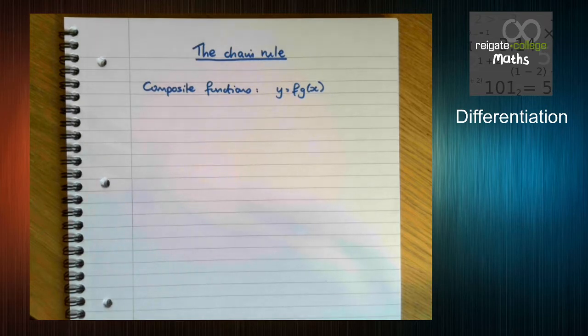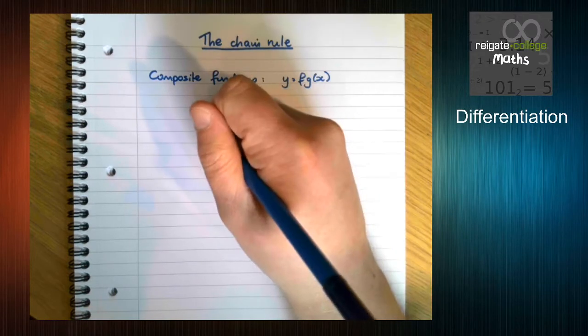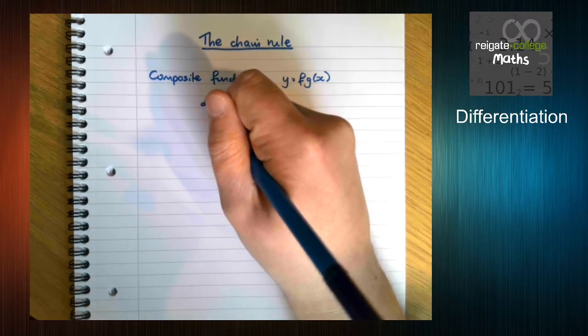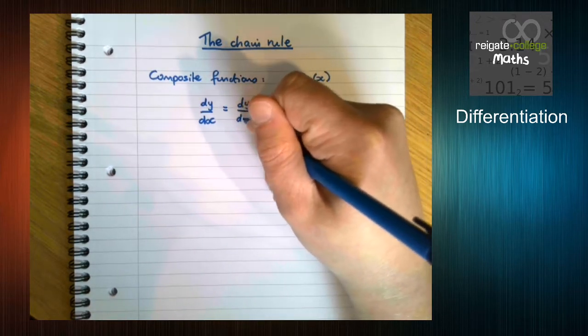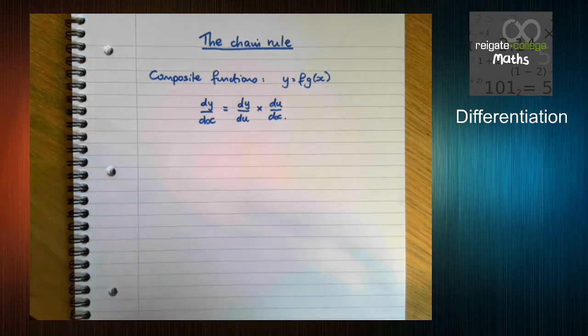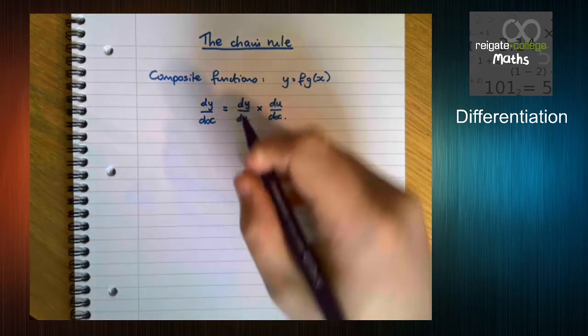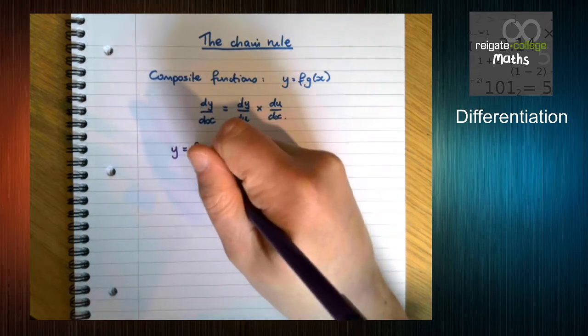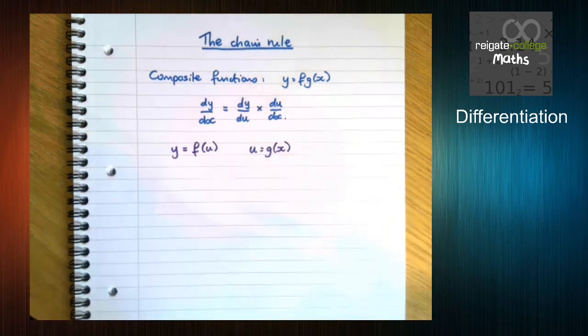Now there are lots of general rules and tricks that you can more often than not use in questions in the exam, but the formal chain rule is this: if we have dy/dx, that is the same as dy/du times du/dx. What are the y's and u's in all of this? Well, what we're saying is very similar to this, where y is some function of u and u is some function of x.